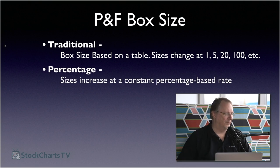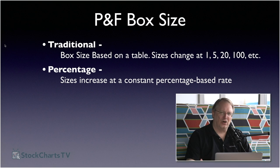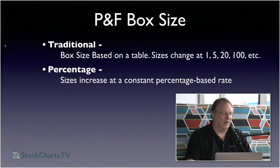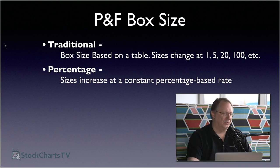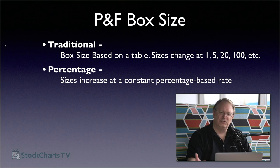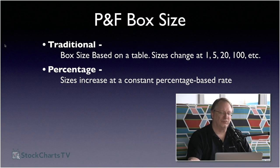When computers arrived, Percentage scaling was developed. Instead of an absolute box size, each box represents a constant percentage of price — making a very consistent chart across wide price swings. The downside is that box boundaries won't be nice round numbers, unlike Traditional which always gives round numbers.